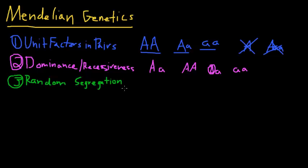Random segregation just says that when a certain individual reproduces, that individual has an equal chance of giving off either one of its two alleles.